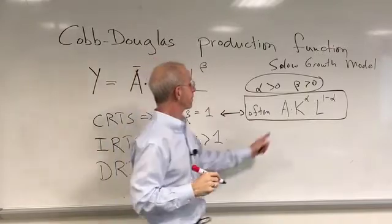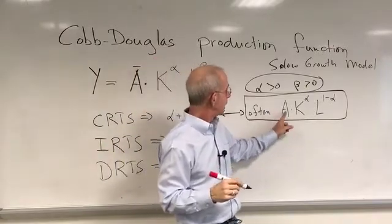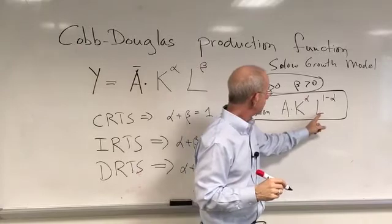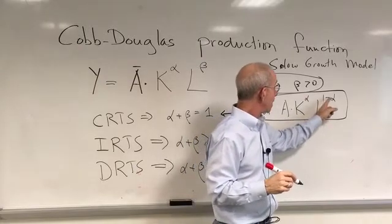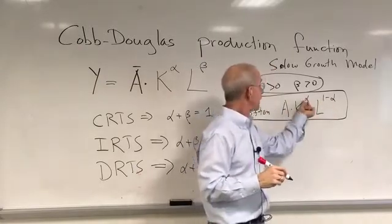So alpha plus beta equal to one will mean you have constant returns to scale. This is often written in the following way, where the production function is A times K to the alpha, L to the one minus alpha.